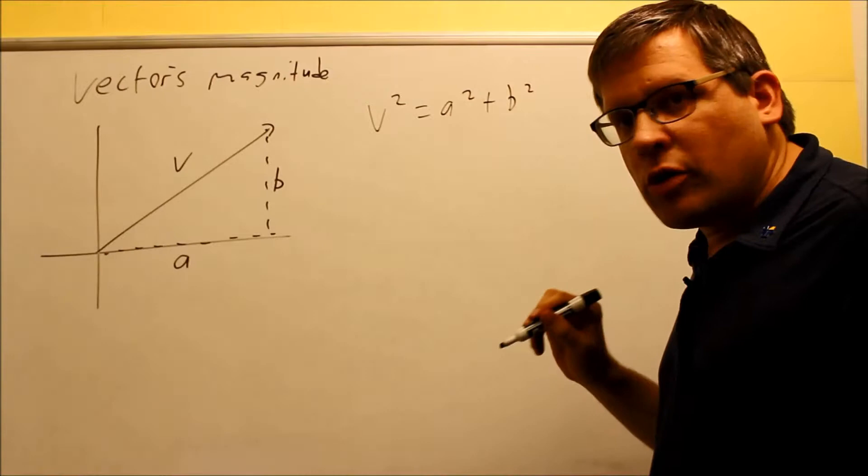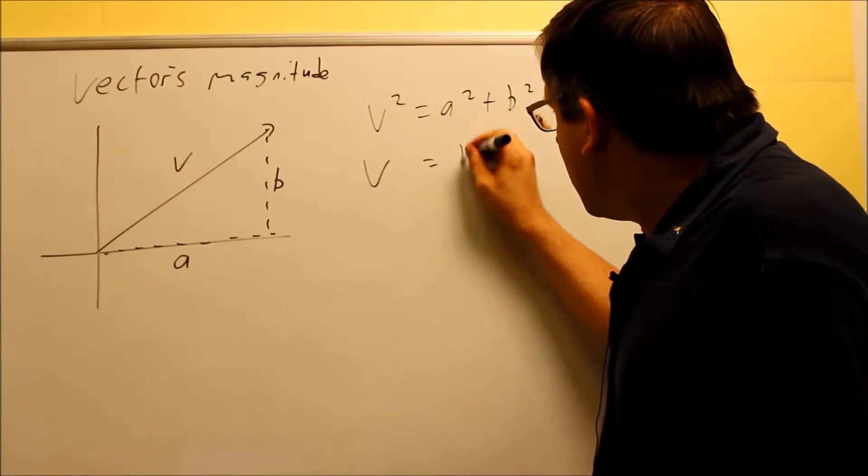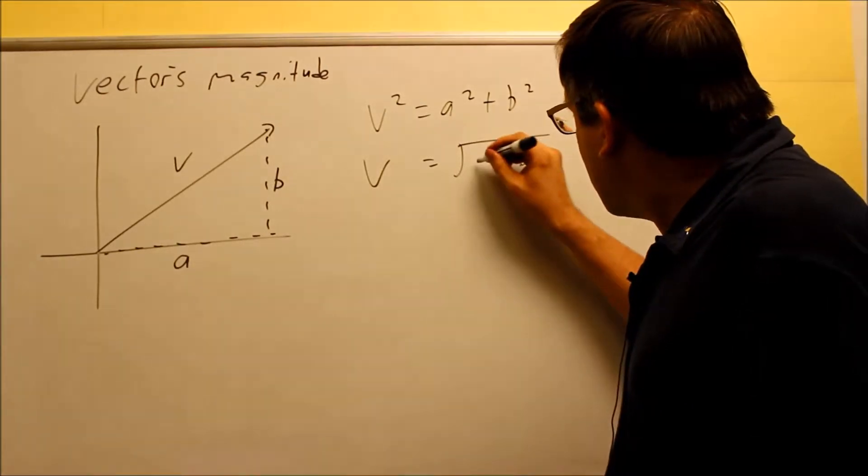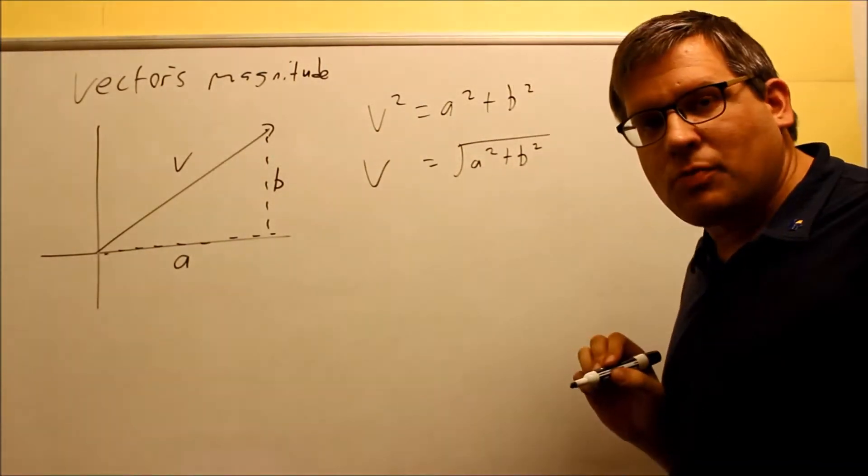I would take the square root of both sides and I would get V, and that equals... Now, I'm not going to worry about getting a negative value here. I want to find out how long something is, so I want to make that just positive.